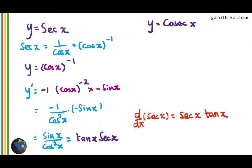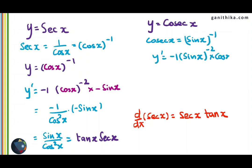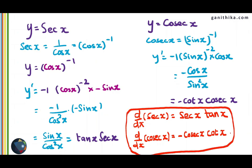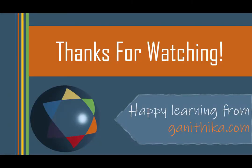Pause the video and try to find the derivative of cosec x in the same way. Using the chain rule, simplifying gives minus cos x over sin squared x, which is minus cot x cosec x. Therefore, the derivative of cosec x is minus cosec x cot x. These two are the formulas for the derivatives of secant x and cosec x. I hope you enjoyed this video. Thanks for watching.